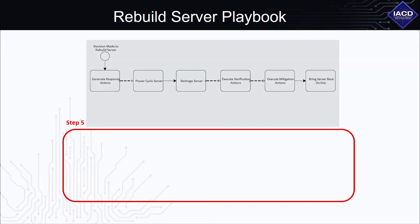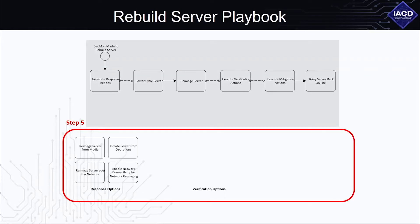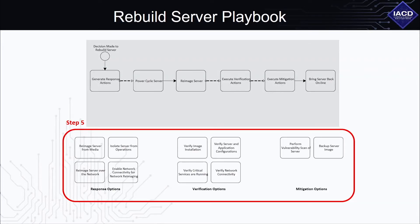Step 5: Decide whether the optional actions identified in Step 3 can be grouped by activity or function — for example, monitoring, enrichment, response, verification, or mitigation. Ask yourself are there possible actions that can only take place in certain parts of this playbook. This is how you would group the actions.